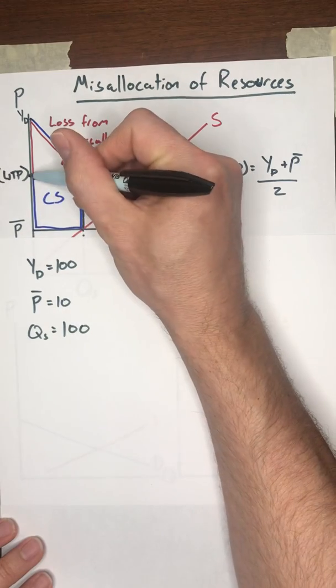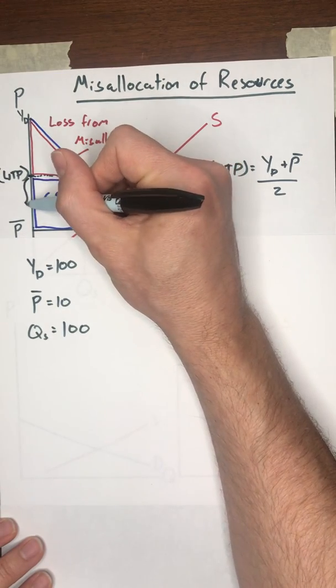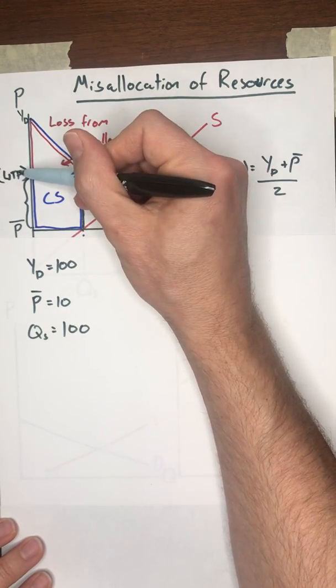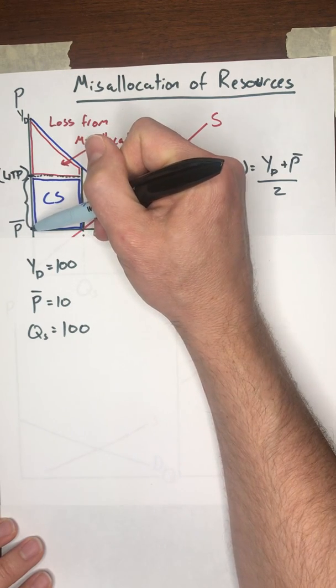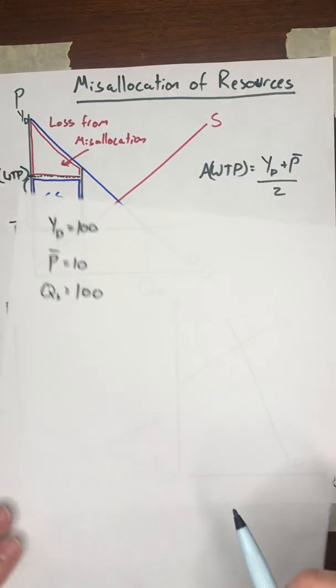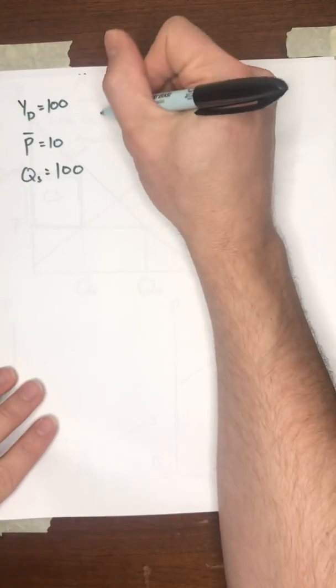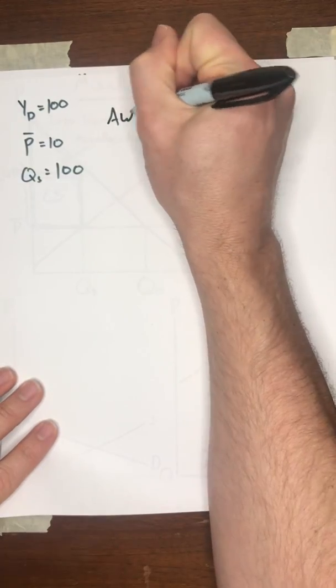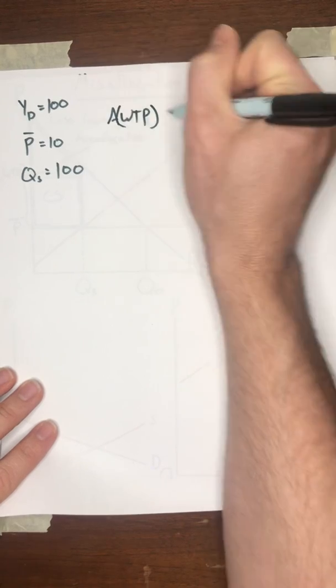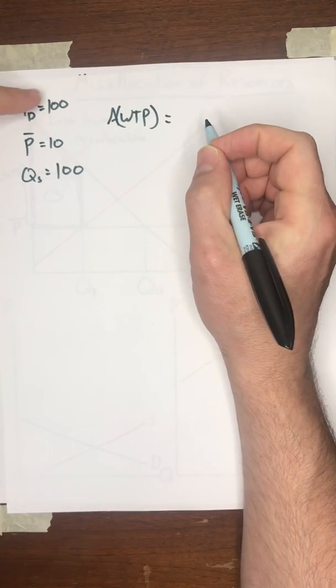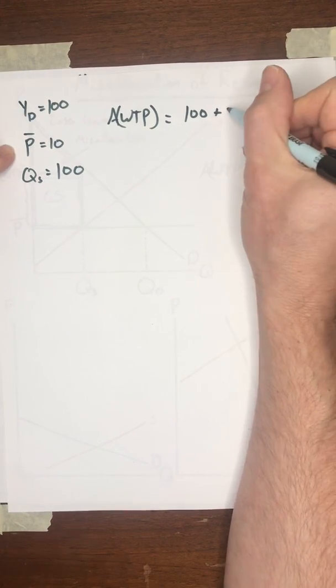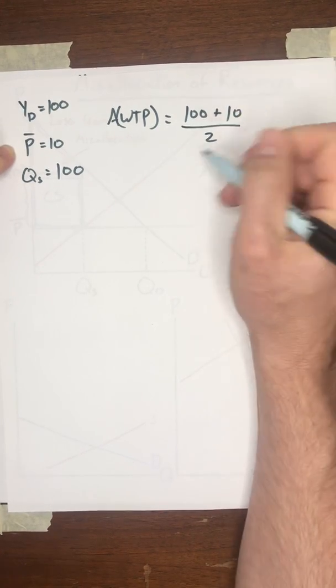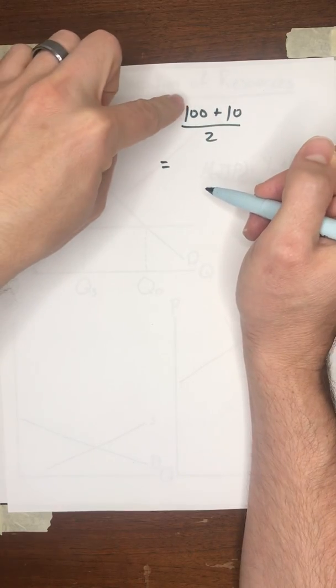Well, first of all, we need to find this height right here, which is going to be the average willingness to pay minus the legislated price. Well, first, let's find the average willingness to pay.